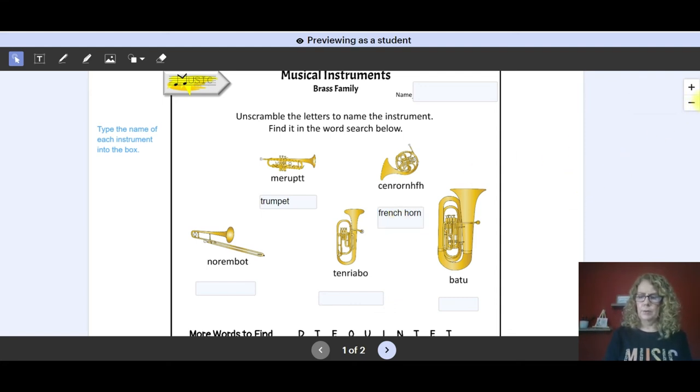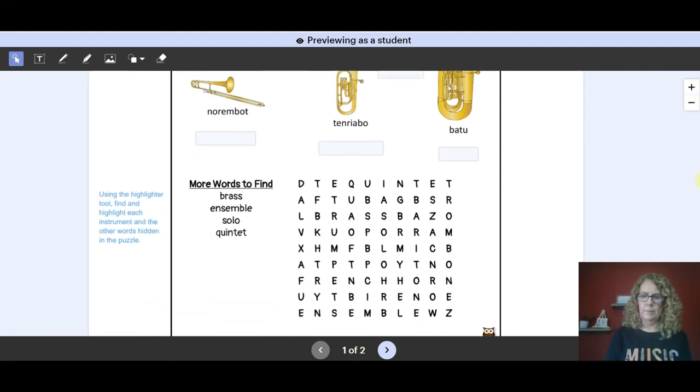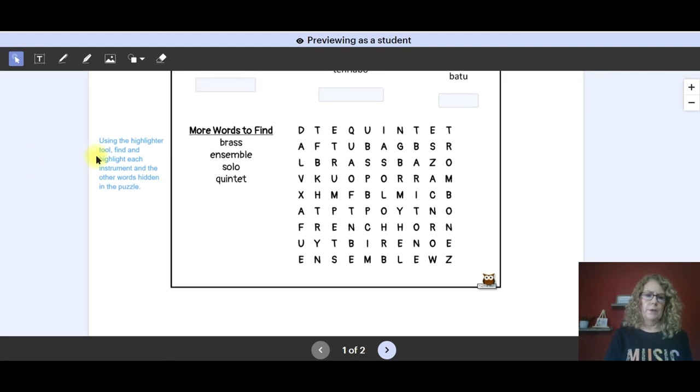The second part I'm going to scroll down so you can see. Our directions are using the highlighter tool, find and highlight each instrument and these other words that are in the puzzle. So this is the pen tool. This is the highlighter tool. And you have some options here.